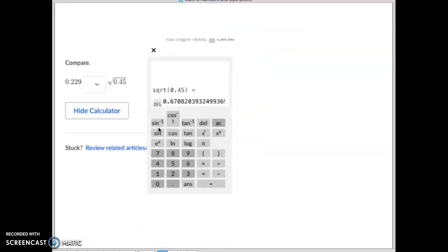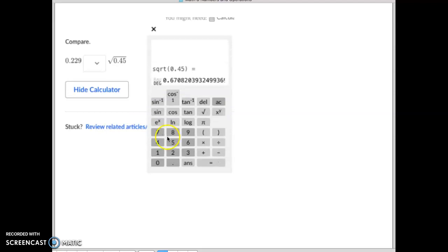Alright, let's do another one. Sometimes we have to compare. So again, we have to take the square root of 0.45. So you hit the square root button, and that will give you the square root in the first parenthesis. Then you type in 0.45 and then hit your back parenthesis. Hit equals.